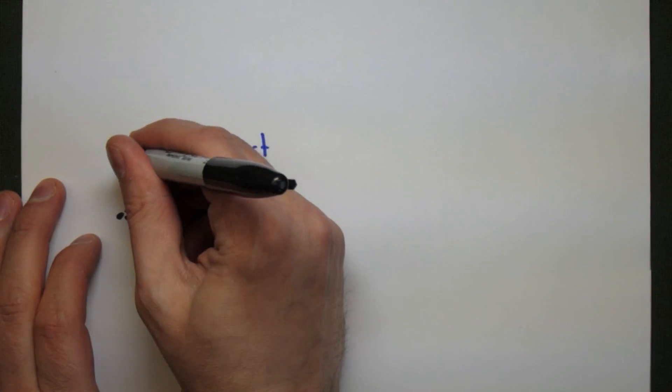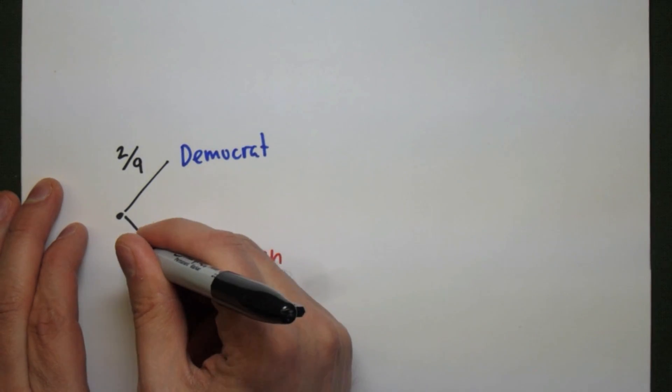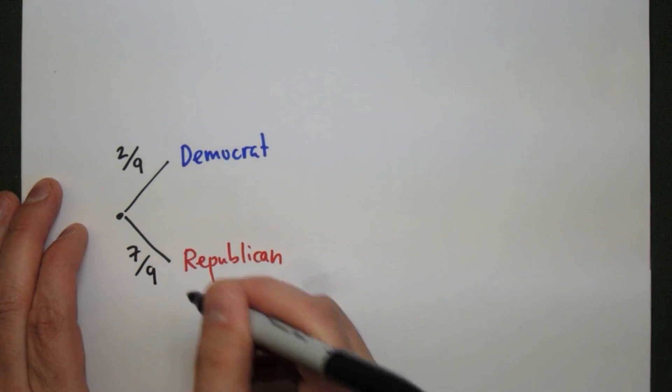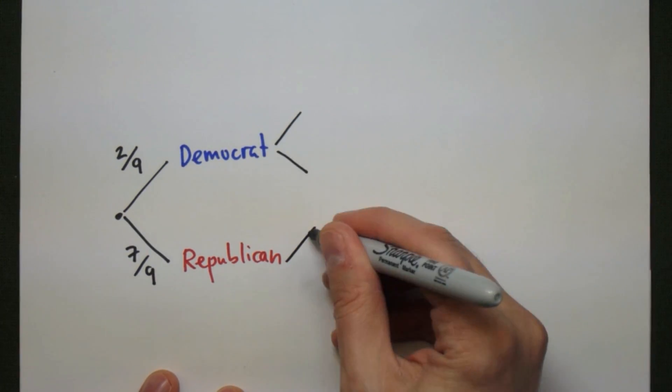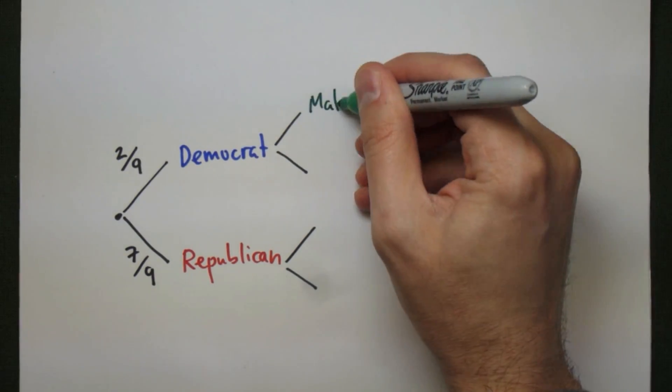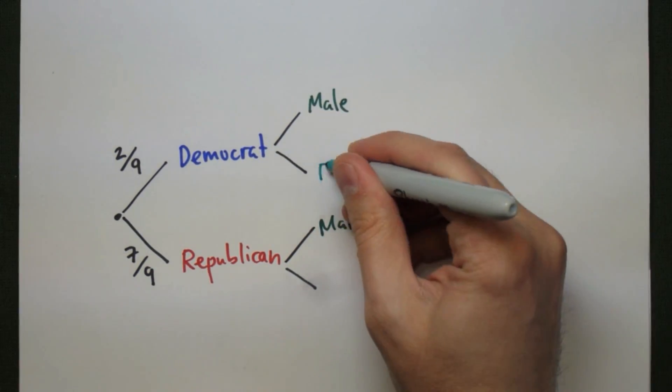The probability that this person is a Democrat is two out of nine. Two of the nine people are Democrats, and the remaining seven out of nine are Republicans. Now we're going to split the Democrats and Republicans into males and females. From each of these two different places, we're going to put two branches: male and female.